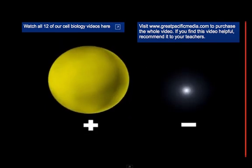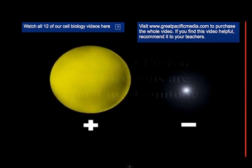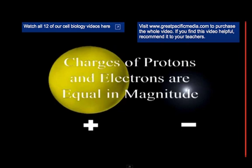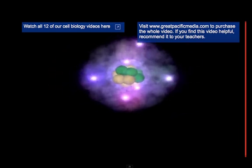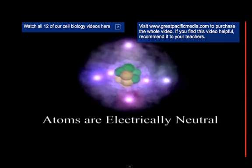However, in spite of the huge difference in mass between protons and electrons, their electrical charges, though opposite, are equal in magnitude. As atoms have equal numbers of protons and electrons, they are electrically neutral.